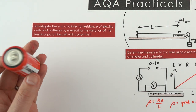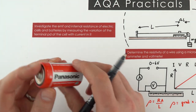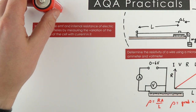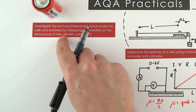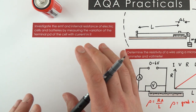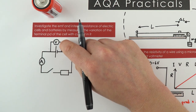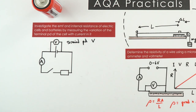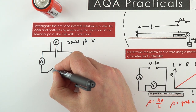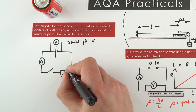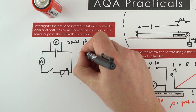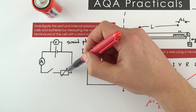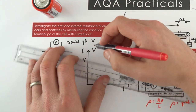The final practical looks at the EMF and internal resistance of electric cells and batteries. Use a fairly new standard cell. Set up a circuit with a voltmeter across the cell terminals, an ammeter, and a variable resistor to adjust the external resistance. When the switch is closed, read the terminal pd V and the current I. Vary the readings using the variable resistor. When there is lower external resistance, a greater current flows and the terminal pd falls.